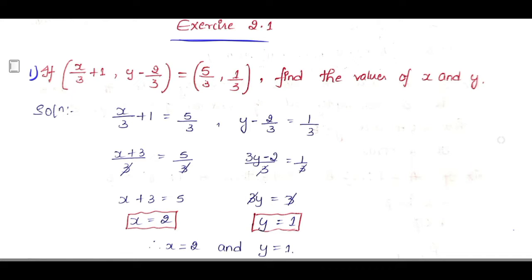See this first problem — what they have given? They have given that these two ordered pairs are equal. The ordered pair (x/3 + 1, y - 2/3) is equal to the ordered pair (5/3, 1/3). They have given that these two ordered pairs are equal, and they are asking us to find x and y.